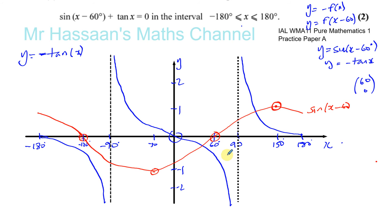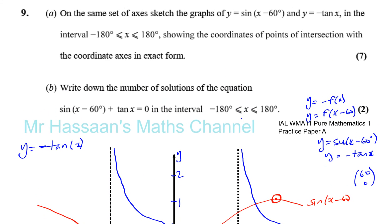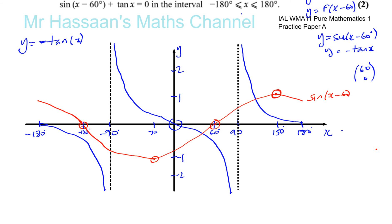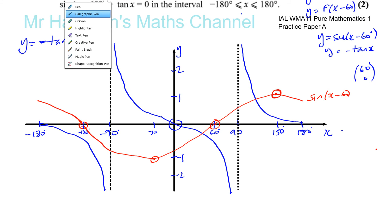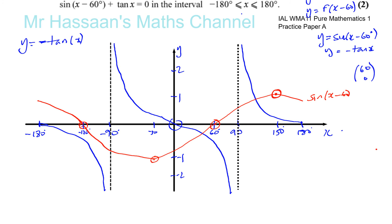Now we have to write down the places where these curves hit the x-axis and show the coordinates. The negative tan curve hits the x-axis at minus 180, 0, and 180. The asymptotes are at x equals minus 90 and x equals plus 90. For the sine curve, it hits the x-axis at 60 and minus 120. And it hits the y-axis at a point we need to show the coordinates for.